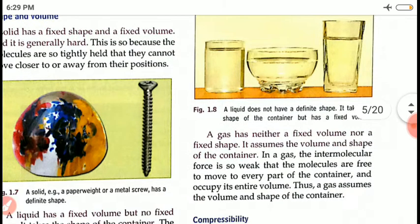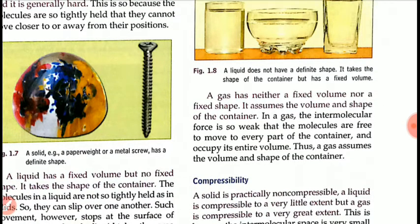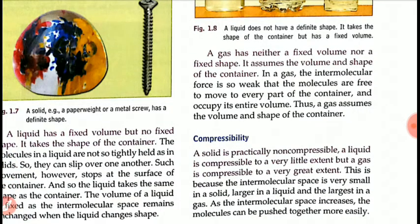A gas has neither a fixed shape nor a fixed volume — it assumes the volume and shape of its container. In a gas, the intermolecular force is so weak that molecules are free to move to every part of the container and occupy its entire volume. Thus gases do not have a fixed shape nor a fixed volume.